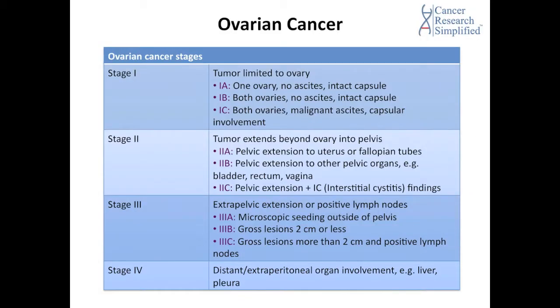Stage 4 is the metastatic stage, as with many other cancer types. Unlike stage 3 where lymph nodes are involved, in stage 4 it is usually distant organs that are involved. At stage 4, distant extra-peritoneal organs are involved, such as the liver and pleura.